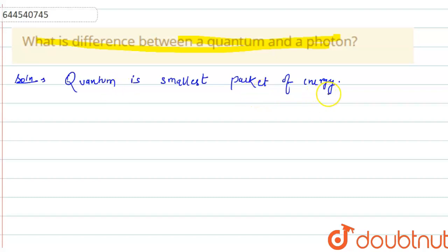And that smallest packet has definite energy in its magnitude. And that smallest packet is known as quanta.